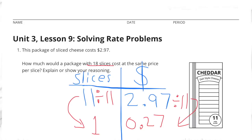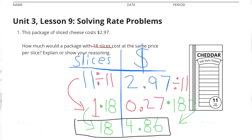I divided 11 by 11 so I could figure out how much it costs for just one slice. Then I divided $2.97 by 11 and figured out that it was $0.27 per slice. I multiplied 1 times 18 since they wanted to know how much it would cost for 18 slices. So then I multiplied $0.27 times 18 and I got $4.86. For 18 slices, it would cost $4.86.